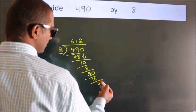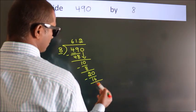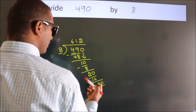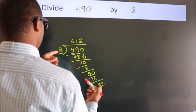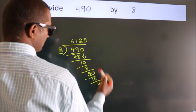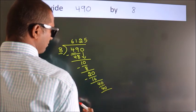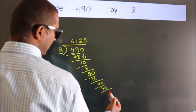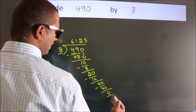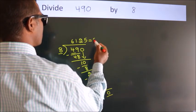After this, we already have the decimal. So directly take 0. So 40. When do we get 40? In 8 table, 8, 5, 40. Now we subtract. We get 0. Here we got remainder 0. So this is our quotient.